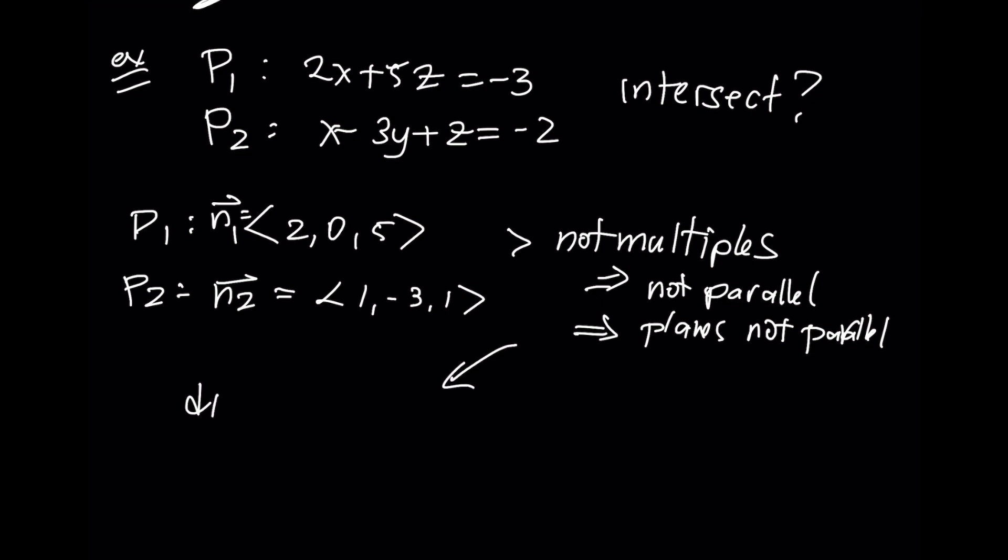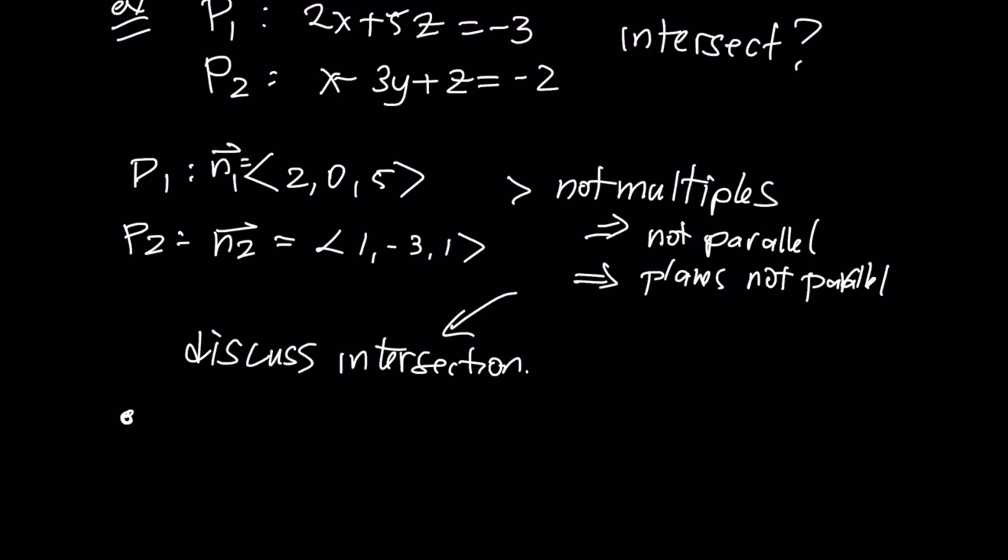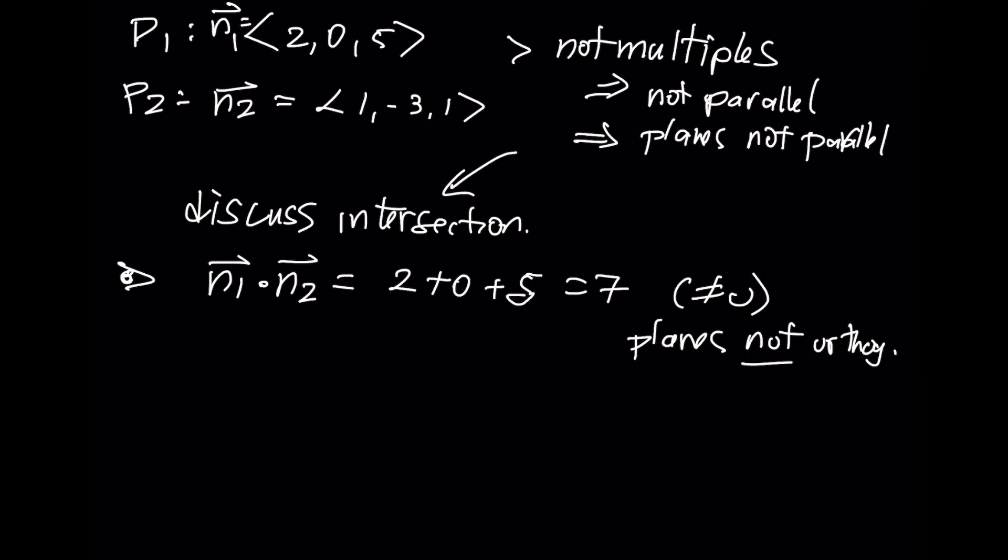So let's discuss the intersection. If I were to say n₁ dotted with n₂, I'll get 2 + 0 + 5 = 7. Because this is not 0, that means the planes are not orthogonal. They don't intersect at a right angle. So what is the angle?